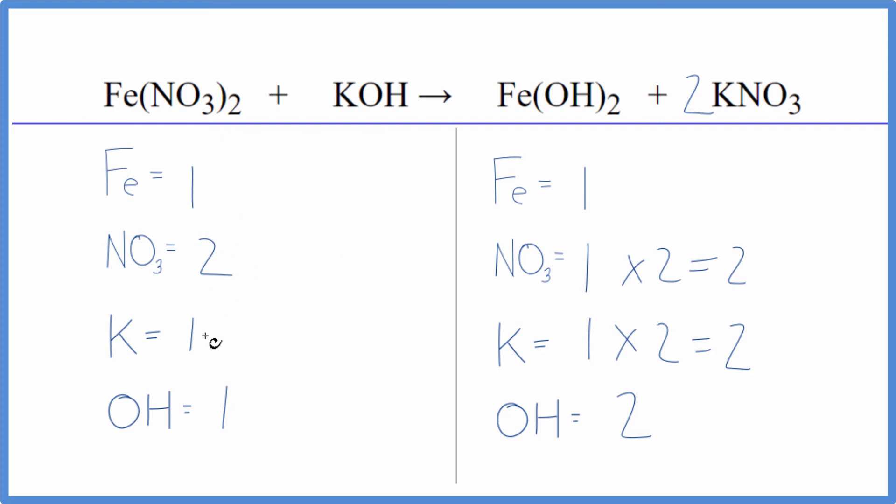That's okay because I can see if I put a two here, one times two balances the potassium atoms, and then this hydroxide one times two. And I'm done. This equation is balanced.